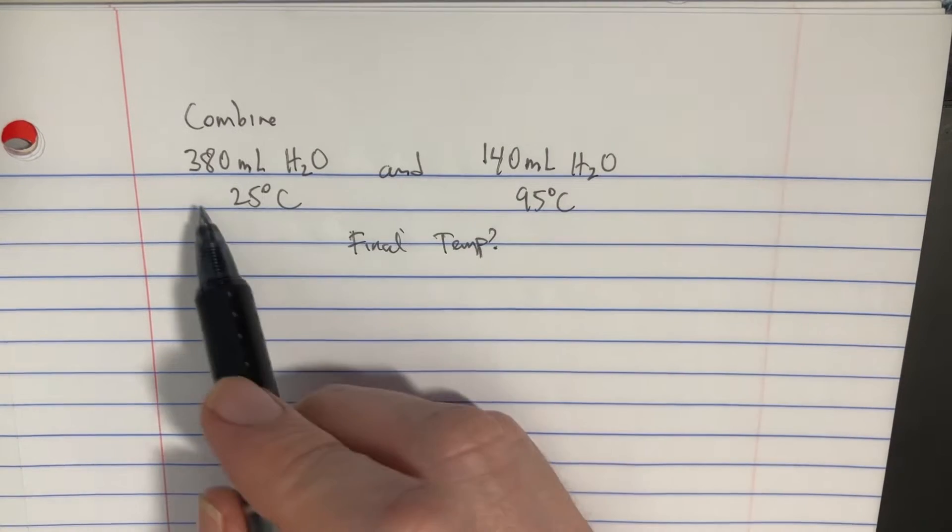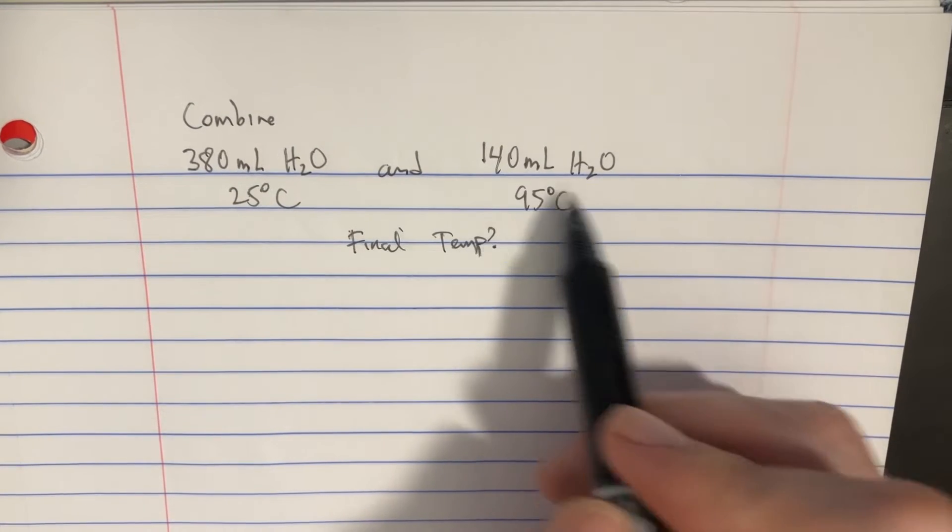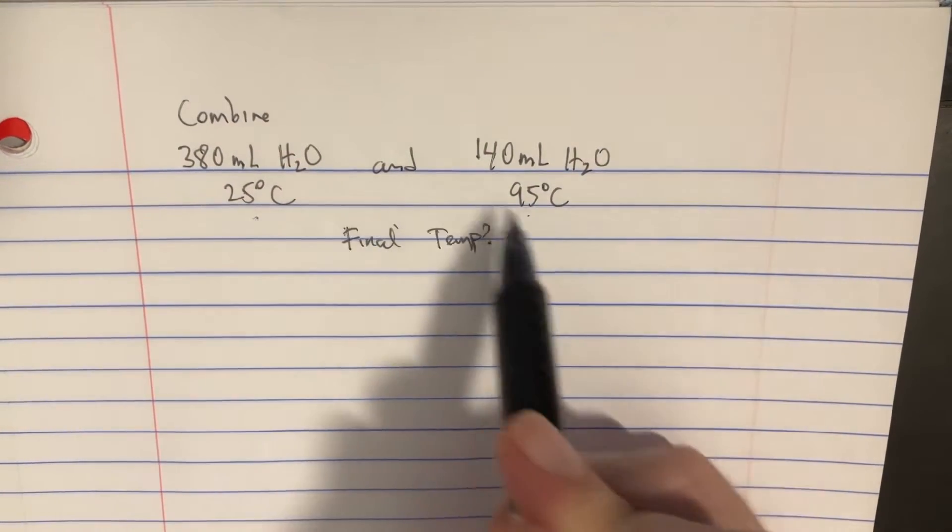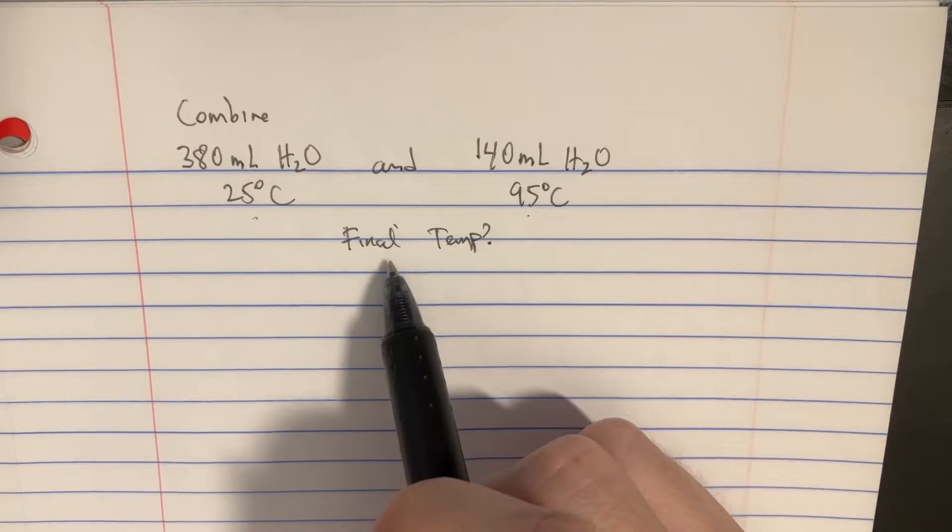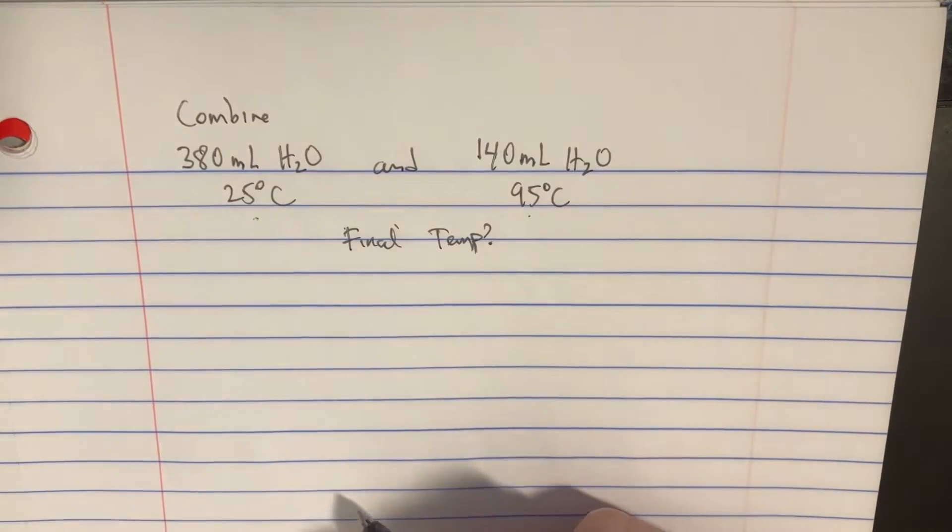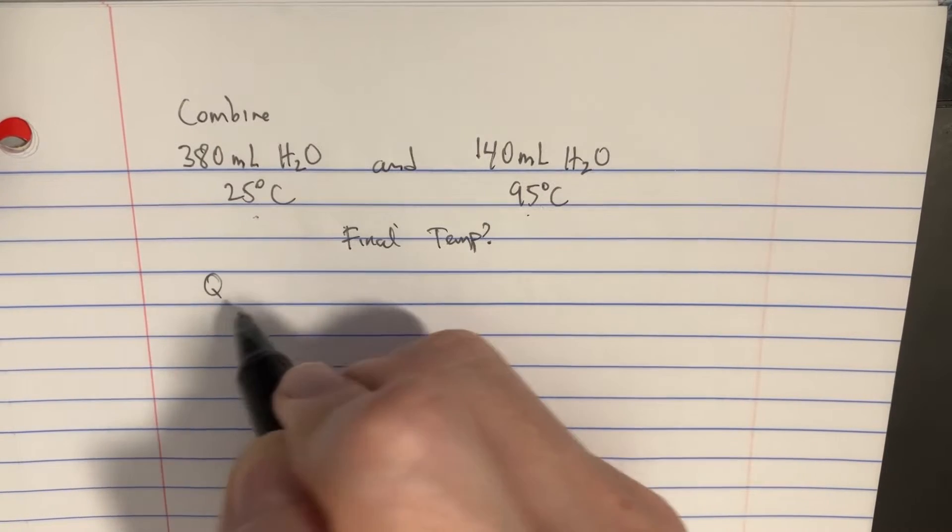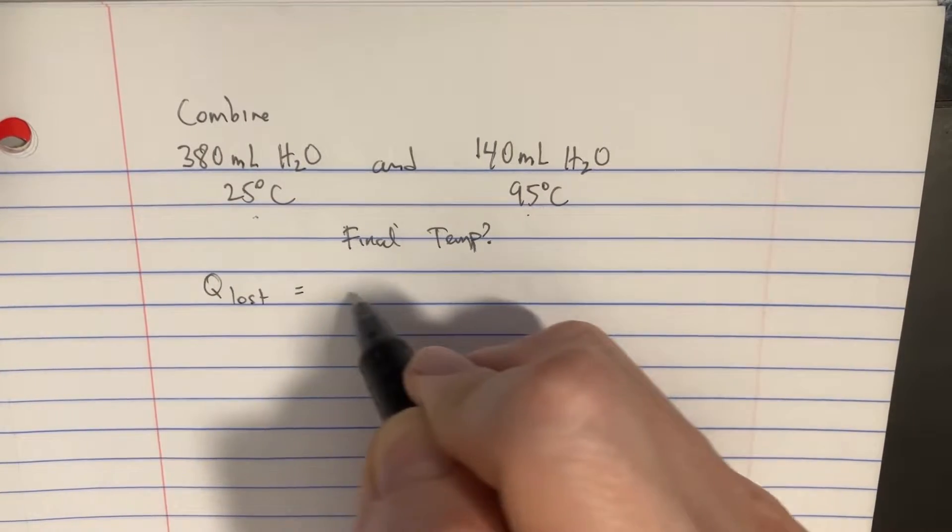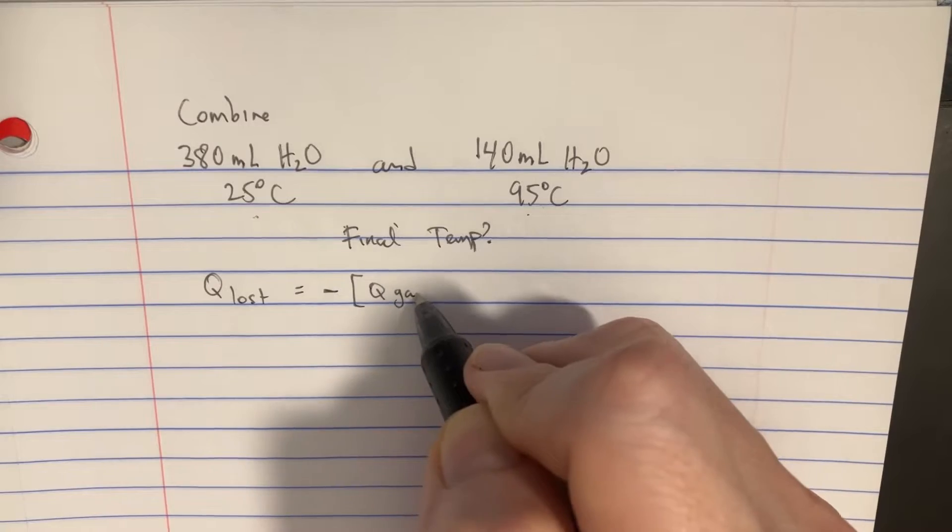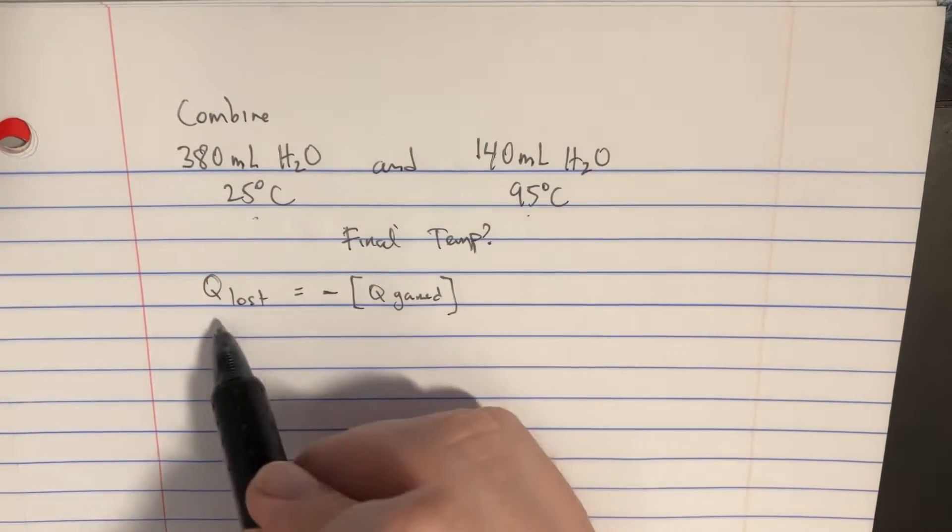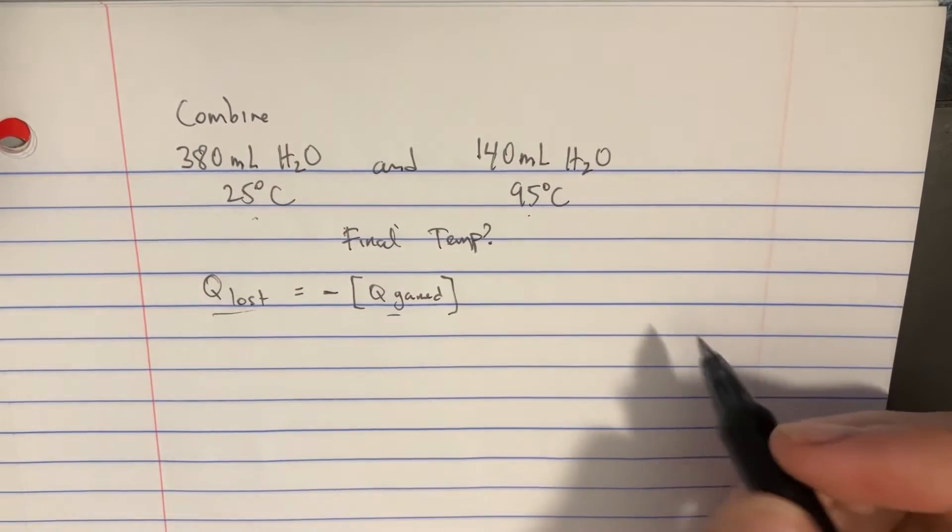If we were to combine 380 milliliters of water and 140 milliliters of water at these specific temperatures here, and we combine them, what would be the final temperature? Well, in order to do that, we basically have to figure out what the Q lost was and set that equal to the negative Q gained. And basically, what that means is we sort of figure out the Q for both of these and then set them equal to each other.